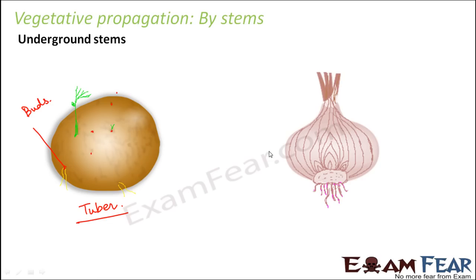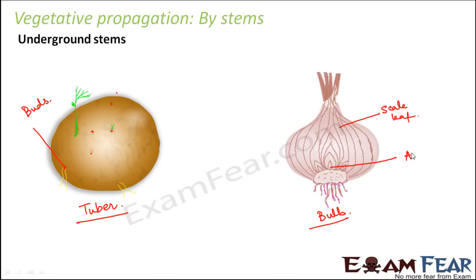Now let us talk about the onion. In onion, the structure we have is called a bulb — this is known as the bulb of onion. It is a short underground vertical shoot with thickened leaves arranged in layers, one after another. The leaves are known as scale leaves. There is an axillary bud, and a disc-like structure which forms the base of the onion. The structure of onion and garlic is quite similar, and this entire structure is referred to as a bulb.